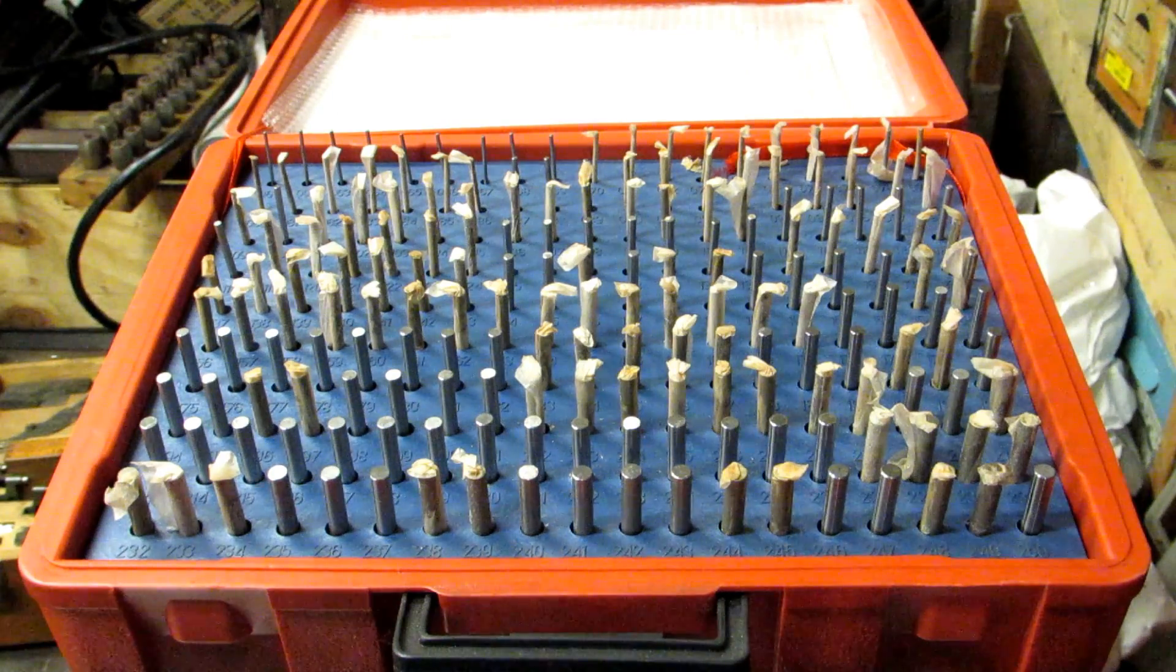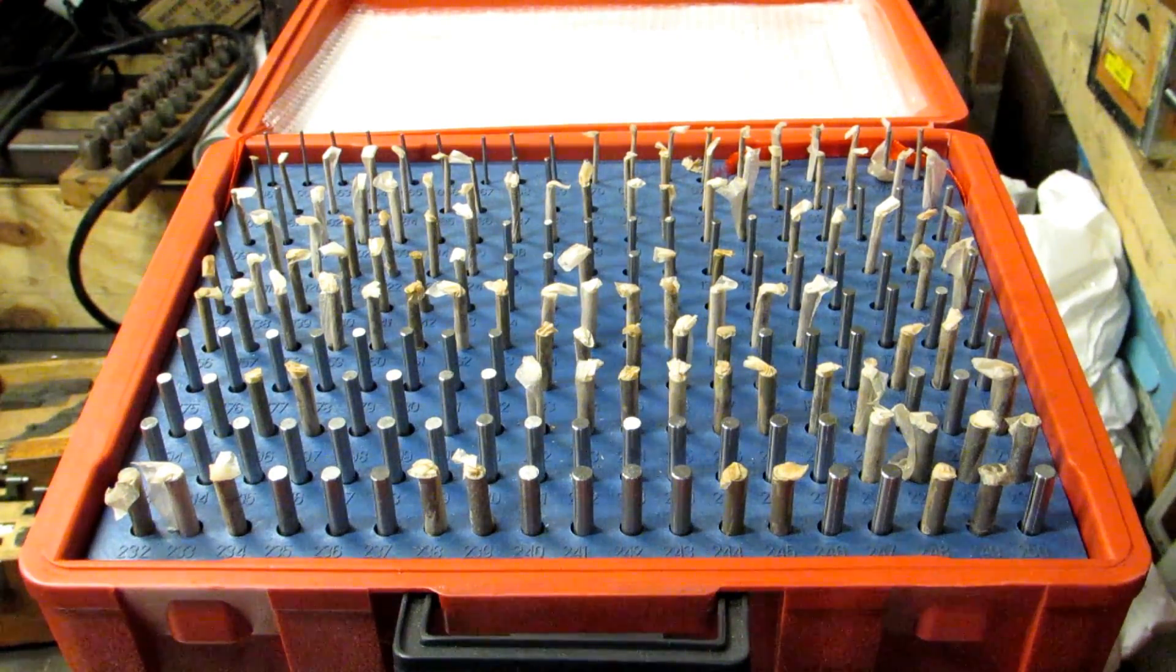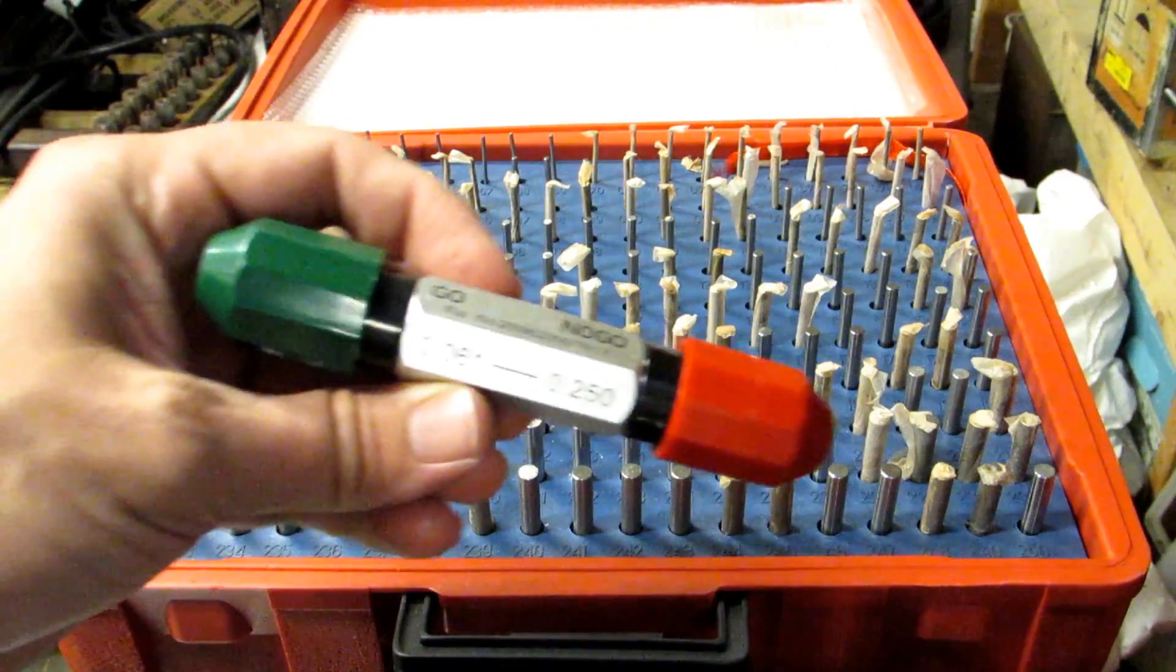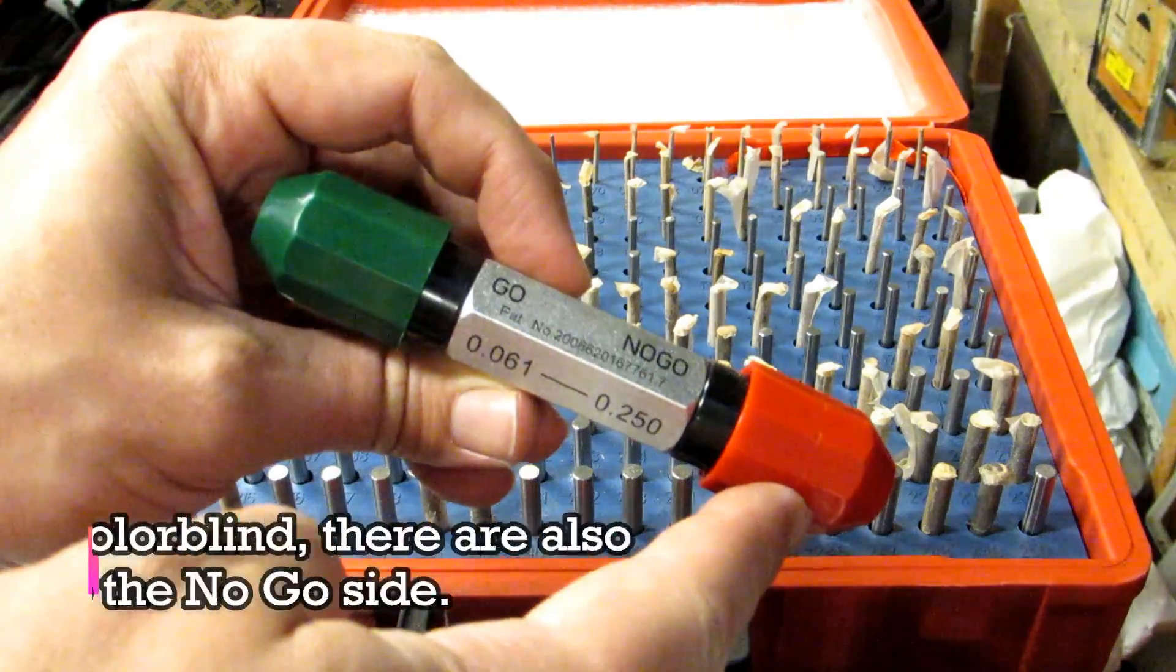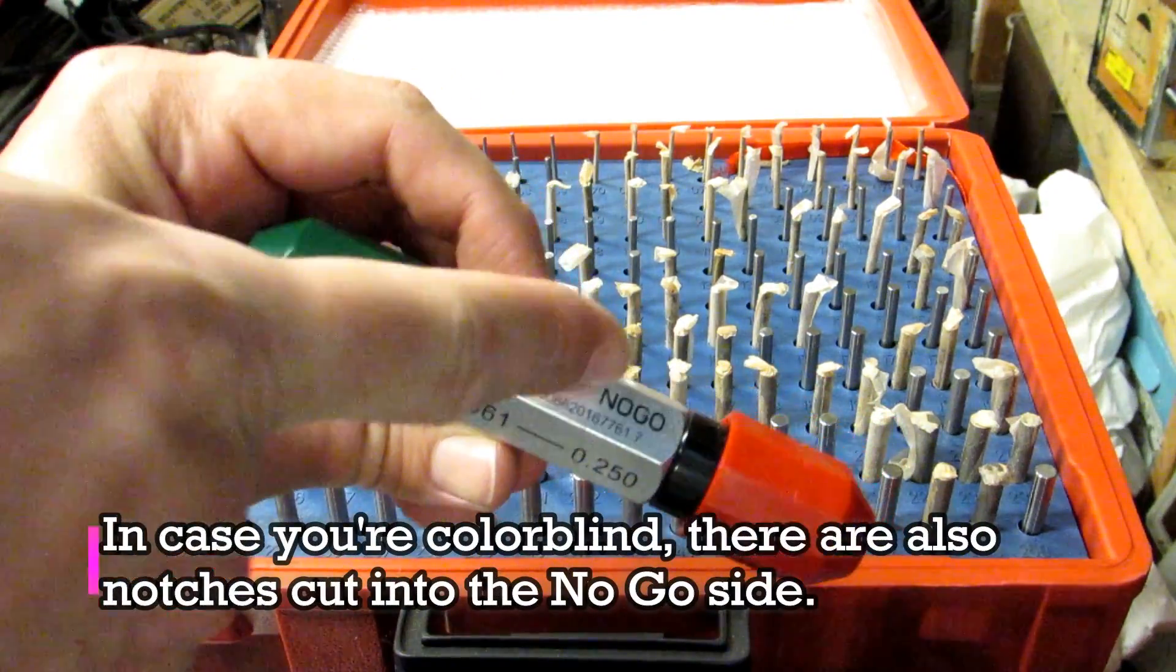The name gauge pin comes from its use in what are called go/no-go gauges. You can buy handles like this. You can see you've got a green side and a red side, and it's labeled go and no-go.